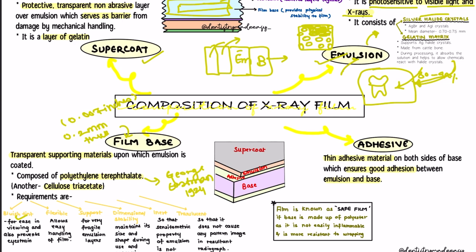The next requirement is that the film base should be inert, because the emulsion has sensitometric properties — if the base is not inert, the emulsion layer and its sensitometry will be affected, which would impact image formation. The film base should also be translucent so it does not cause any pattern image in the resultant radiograph. An important MCQ point: the film is known as a safe film if the base is made of polyester, as it is not easily inflammable.